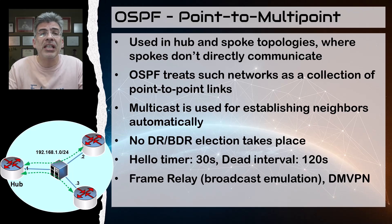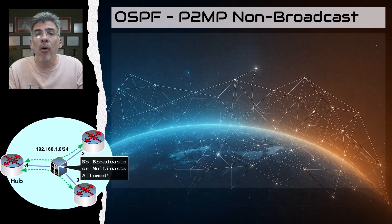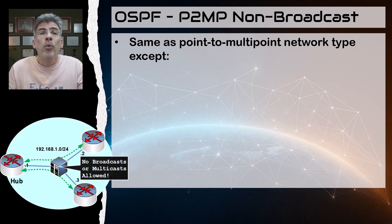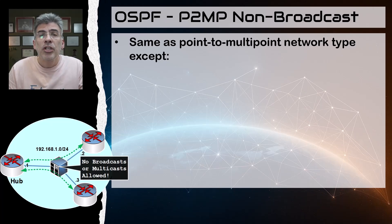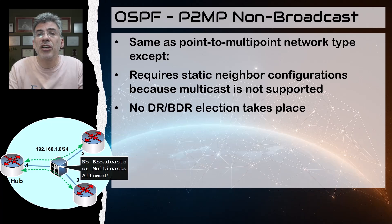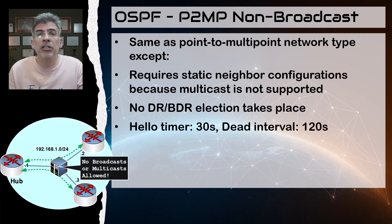DMVPN is also a technology that would use the point-to-multipoint network type. Finally, the last OSPF network type is point-to-multipoint non-broadcast. This network type is used in point-to-multipoint topologies just like the previous type, but without multicast support — that's why we have the non-broadcast keyword. Everything is the same as point-to-multipoint, but because multicast isn't supported, it requires static neighbor configuration. Because such a topology is treated as a collection of point-to-point links, there is no need for a DR/BDR election.